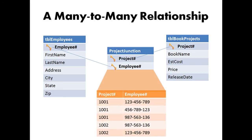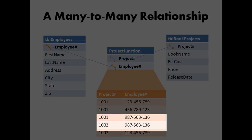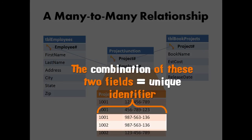So looking at the data table, here's what the information would look like. We can see that employee number 123456789 is working on two different projects — project number 1001 and project 1002. And the employee with the number 987563136 is also working on projects 1001 and 1002. So in essence, not one field but the combination of these two fields acts as the table's unique identifier, thus making a many-to-many relationship possible.